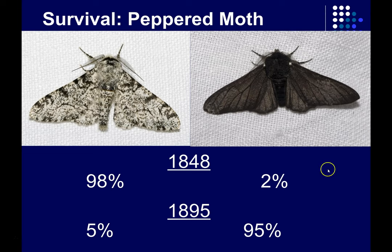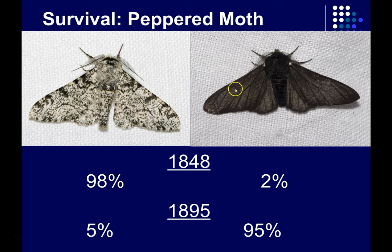Here's a classic example of natural selection at work — the peppered moth. They're found in England, and you can see why they're called the peppered moth: they have this speckled black and white appearance. In 1848, 98% of the population looked like this, but about 2% of the population had a darker pigmentation pattern without the white speckling — you could think of it as the difference between blue eyes and brown eyes. Just one gene influences this, but this lighter pigmentation pattern was much more common in the population as of 1848.